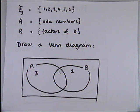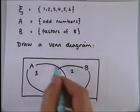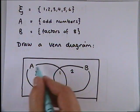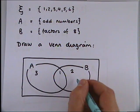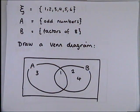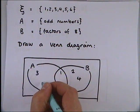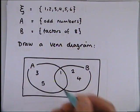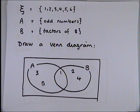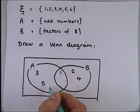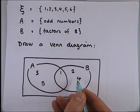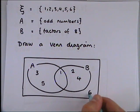Number 4 is not an odd number so it can't go in A, but it is a factor of 8. Number 5 is an odd number but it is not a factor of 8. And number 6 is not an odd number and it's not a factor of 8, so it goes outside the circles.